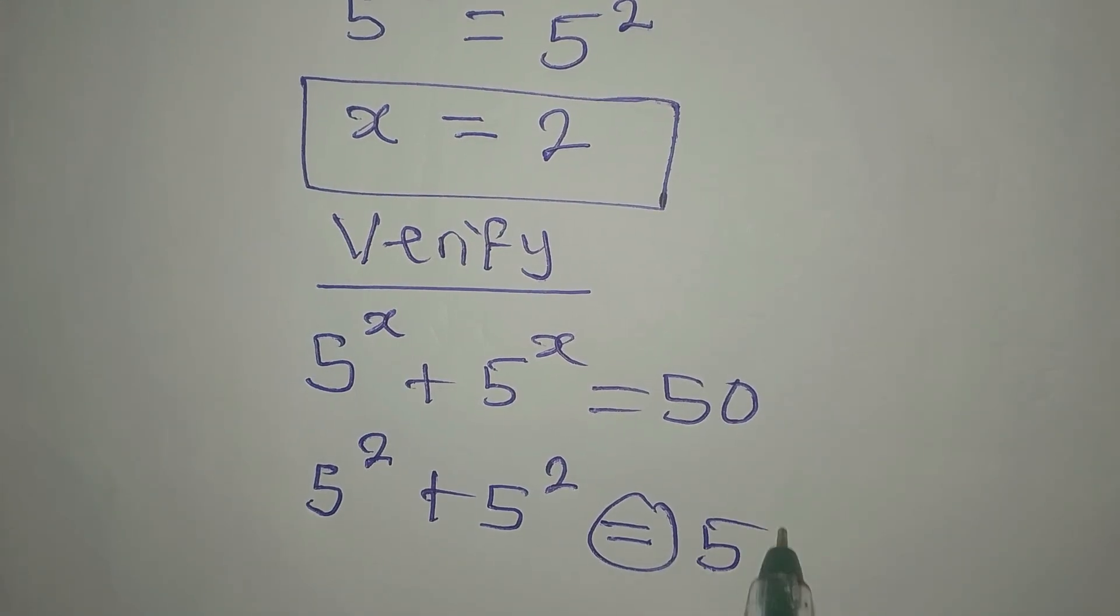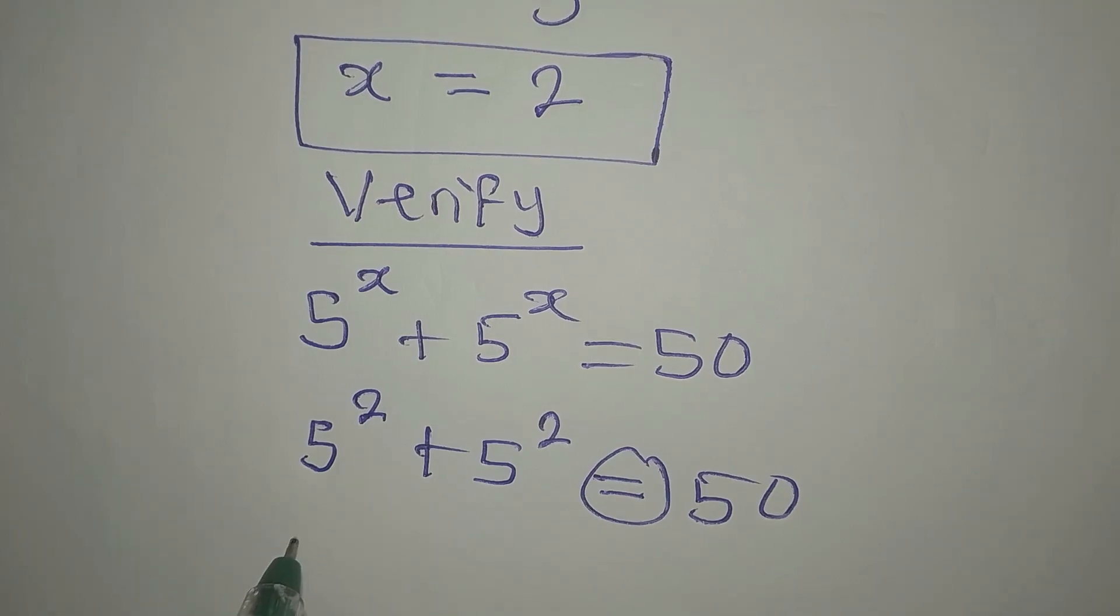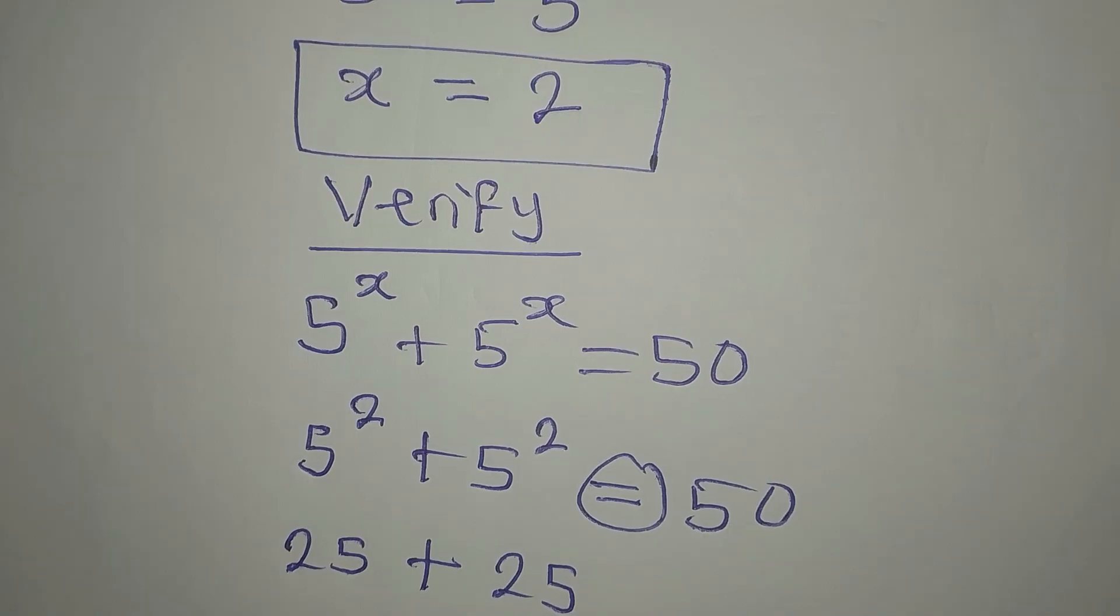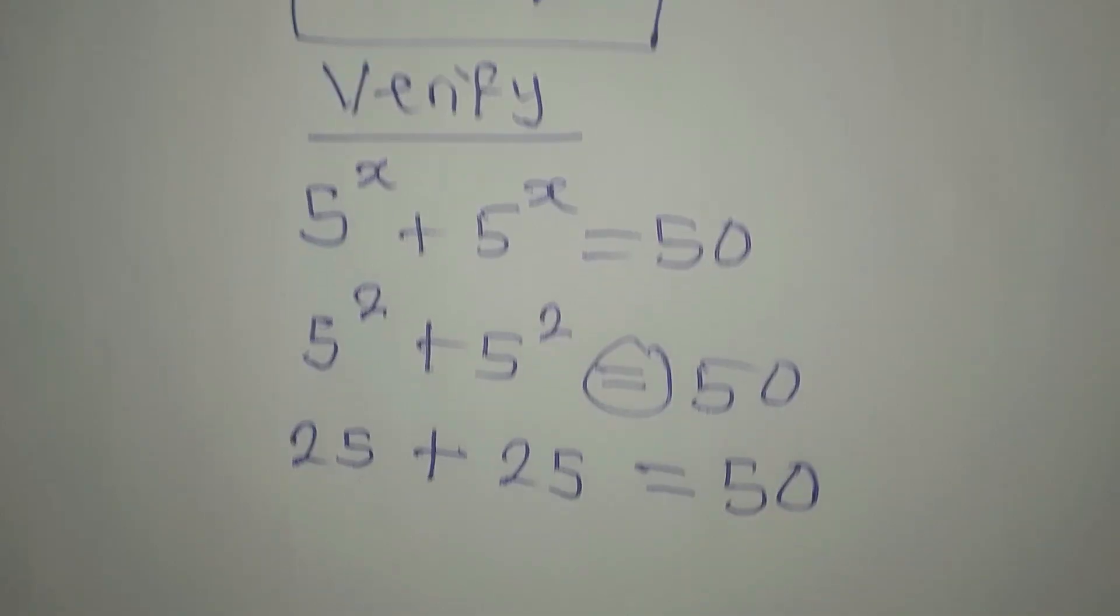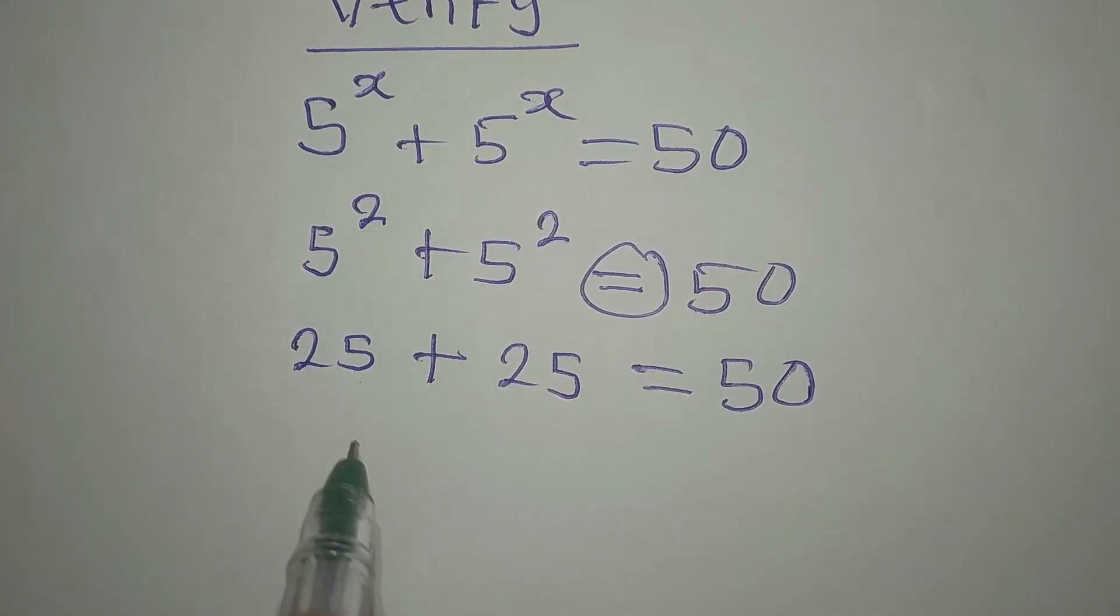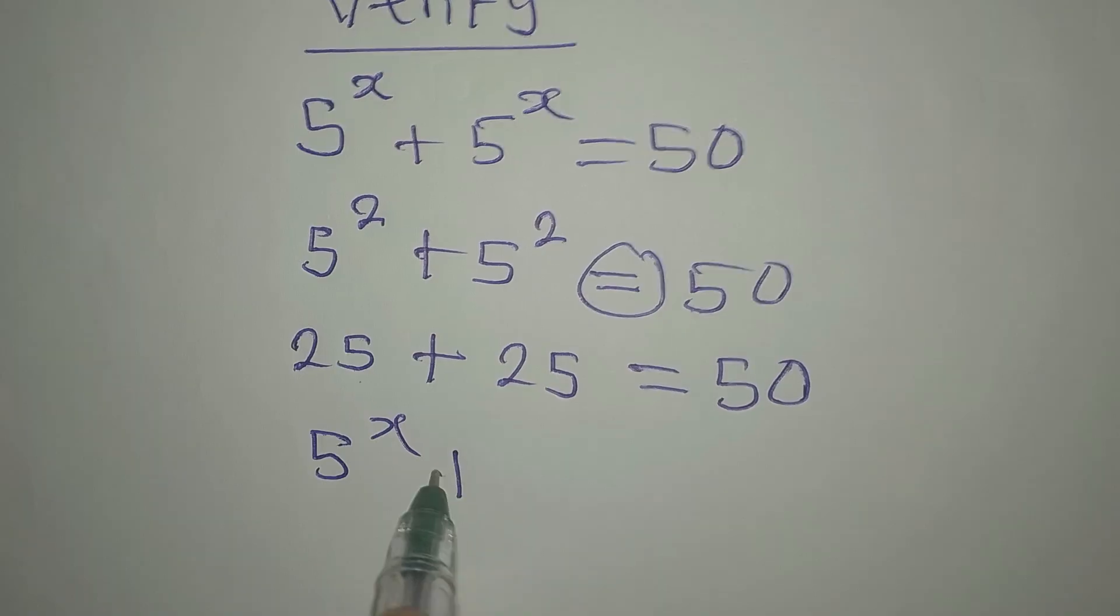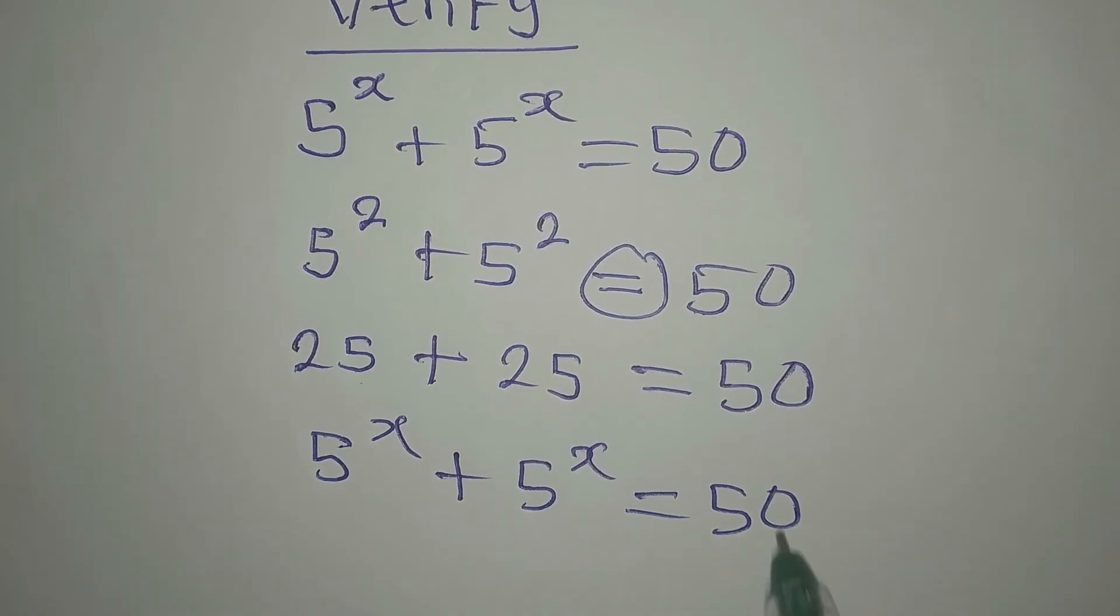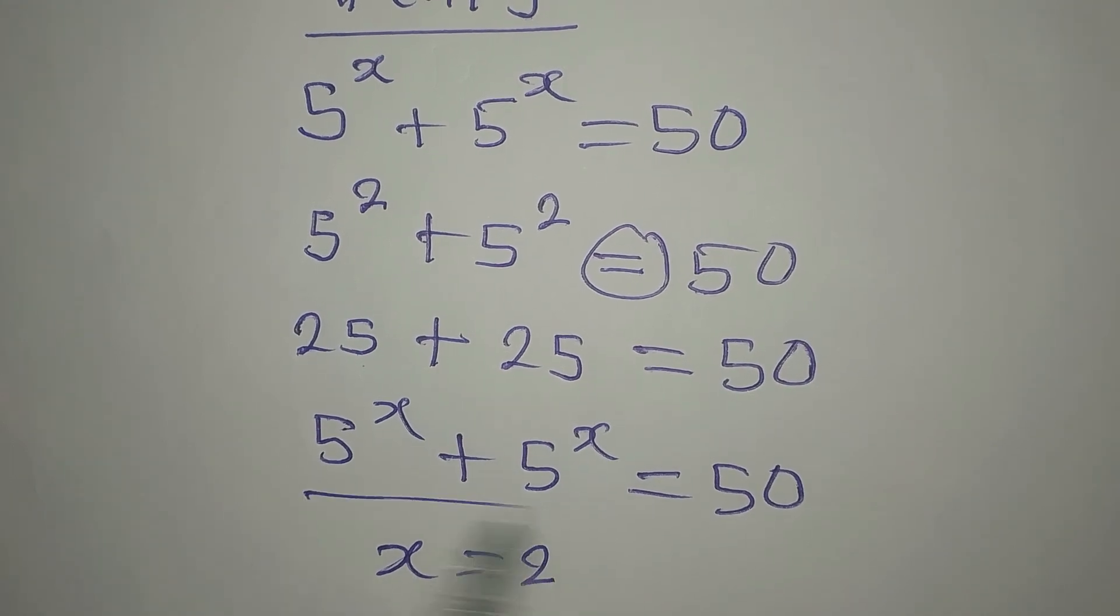The question is, do you think this equals 50? 5 squared is 25, 5 squared again is 25, and 25 plus 25 is giving us 50. So this means that we are correct to say that the value of x in 5 to the power of x plus 5 to the power of x equals 50 is equal to 2.